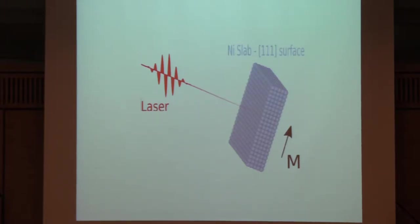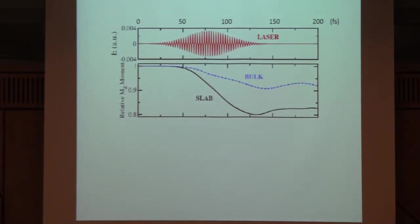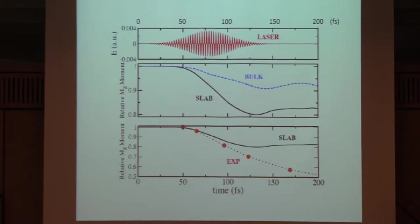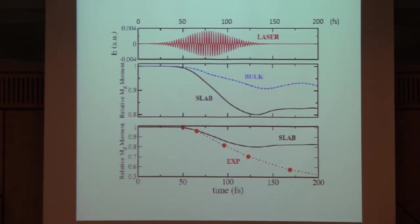Here is a nickel slab, five monolayers. Comparing the decrease for bulk with the slab calculation, the effect is larger. This is for an experimental pulse. Comparing with experiment over a longer calculation for 200 femtoseconds, agreement of our calculation with experiment is perfect on very short time scales of 50–75 femtoseconds. For larger time scales, the experiment decreases further, which is perfectly plausible because on longer time scales the other mechanisms mentioned at the beginning—electron-phonon scattering, diffusion—become relevant.